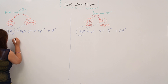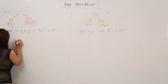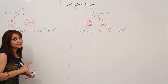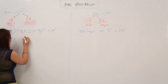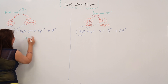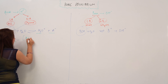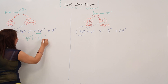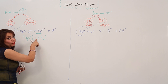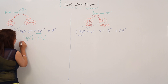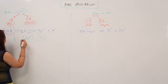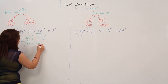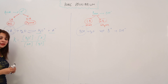Just look at the board carefully. We write it like this: K — which indicates the equilibrium constant — is equal to the concentration of products multiplied together. There is a multiplication sign; don't ever forget, don't put a plus here. Divided by the concentration of the reactants.